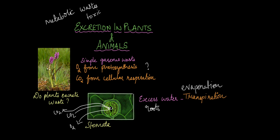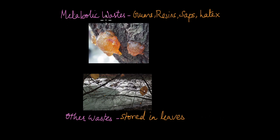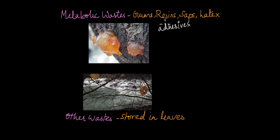But what about other metabolic wastes, like when plants break down proteins or other substances? Plants excrete other metabolic wastes in the form of gums, resins, sap, and latex. Whatever sticky substance you might have observed sticking to the barks of different plants — that is actually the plant's metabolic waste. We have a variety of uses for these gums and resins; we use them to make adhesives like Fevicol and varnishes.